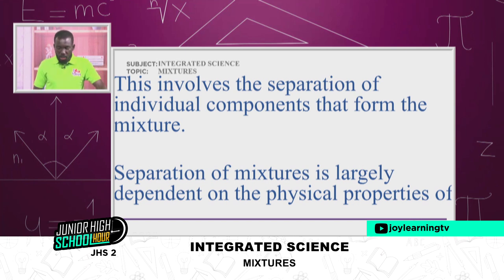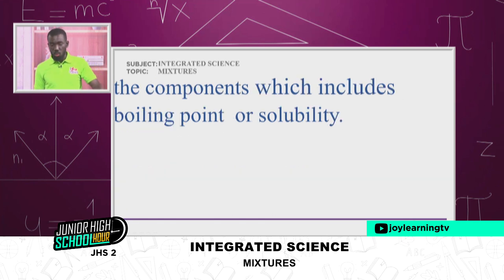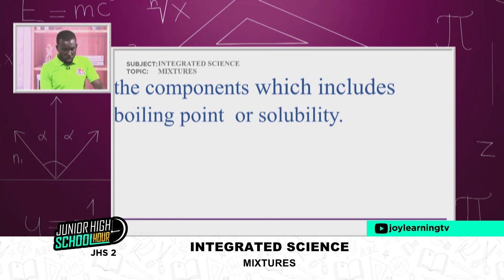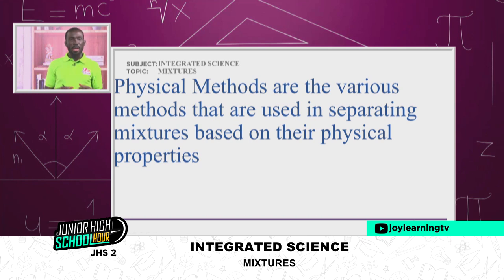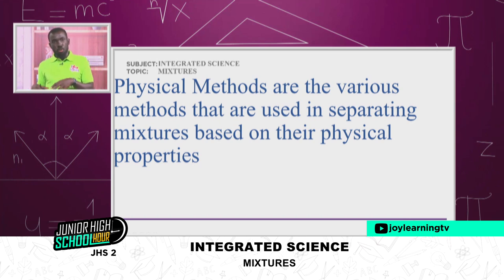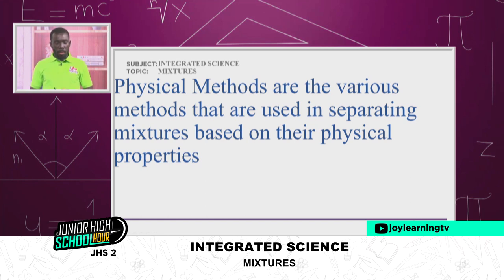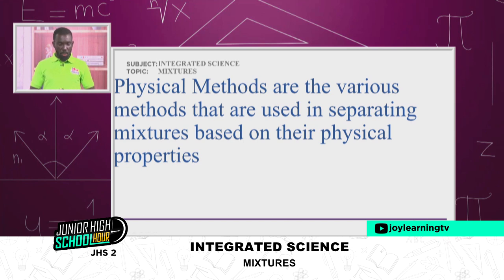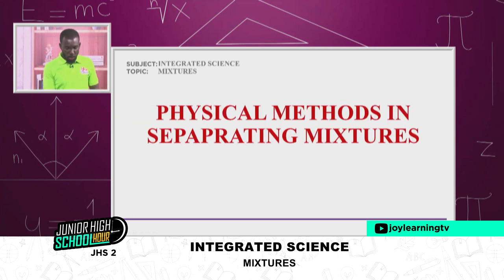Separation of mixtures is largely dependent on the physical properties of the component or constituent, which include boiling point or solubility. Solubility is just the nature of whether an item will be able to dissolve in another thing or a solvent. Physical methods are the various methods used in separating mixtures based on their physical properties.